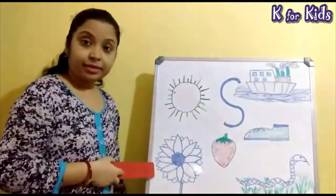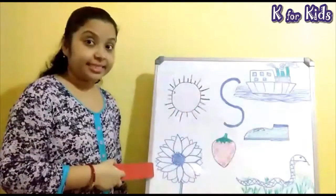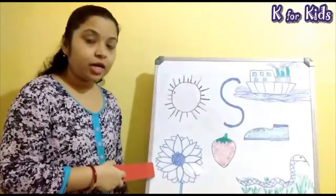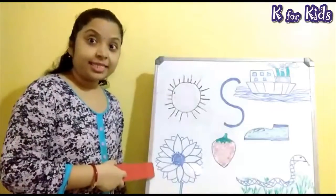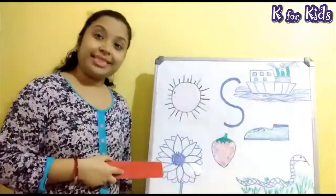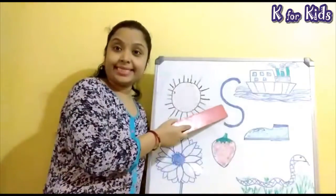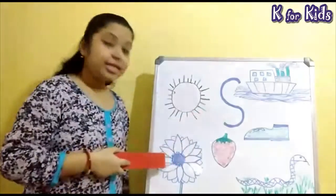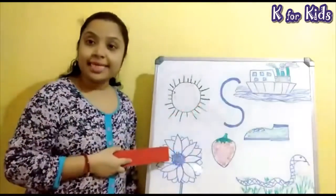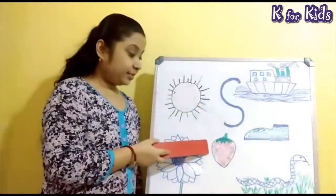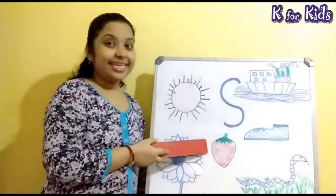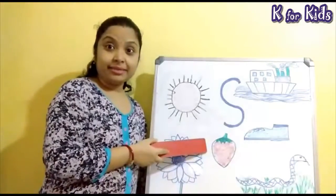Children, what is this? This is a Sunflower. Sunflower always faces the Sun. Sunflower starts with the alphabet S. S for Sunflower.